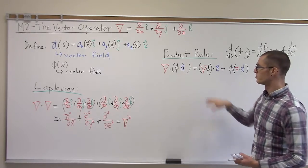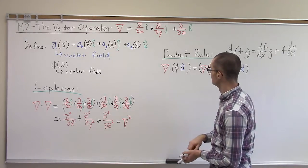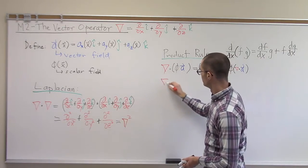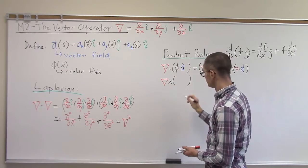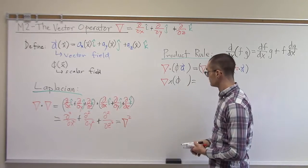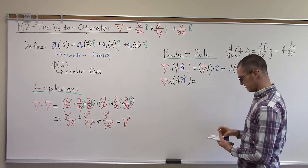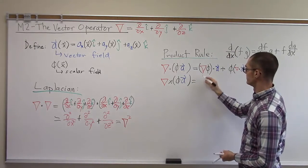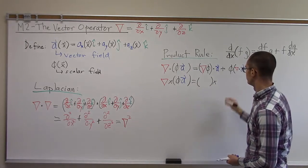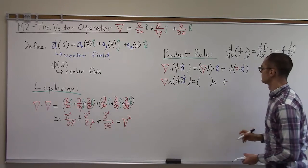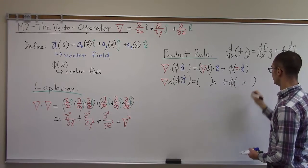When we're doing a product rule involving a divergence, that's how we expand it. We can do the same thing when we do the curl. So if we have the curl of the same field, phi a, that's going to look very similar, except now we replace the dots with crosses to tell us that we're doing the curl. We're going to have gradient of phi crossed with a, plus phi times the curl of a.